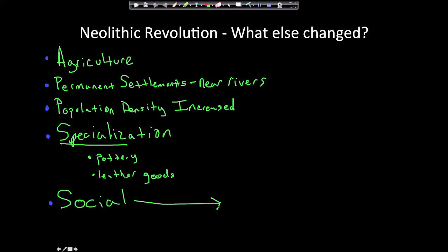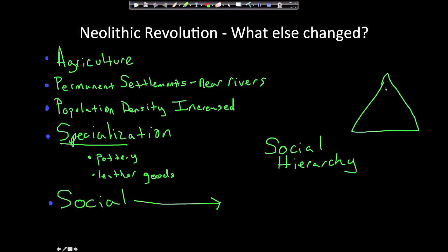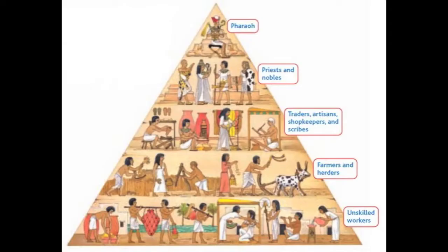Socially, things changed too. In the Paleolithic Era, people were nomadic, going from place to place in smaller groups of maybe 20 or 30. Now people were living in cities, in much larger areas, in a permanent place. So social relationships changed. A social hierarchy developed — with elite people at the top and common people at the bottom.